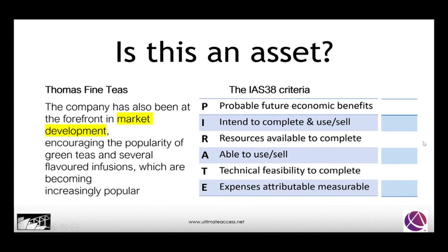Looking at this from the point of view of the IAS 38 PIRATE criteria: are there probable future economic benefits? We think so. Do we intend to complete and use our market development? Do we have the resources? Are we able to use or sell it? Is it technically feasible to complete the market development, and can we attribute our expenses measurably to it? You begin to get the feel that not always do we meet all the criteria.